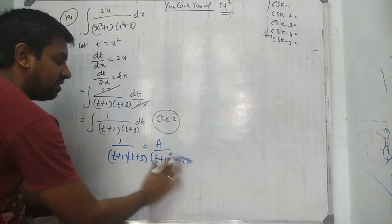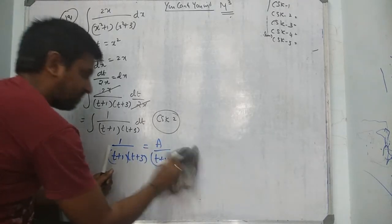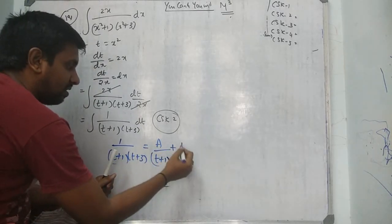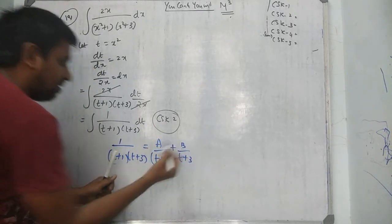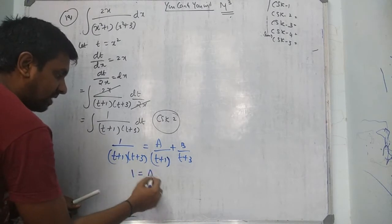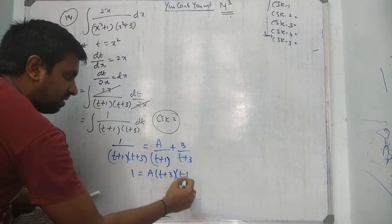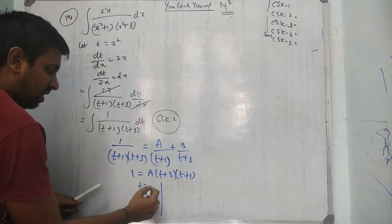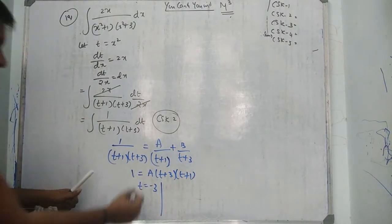So 1 over (t + 1)(t + 3) — CSK2 — write A over (t + 1) plus B over (t + 3). Normal LCM: 1 equals A times (t + 3) plus B times (t + 1). Put t equal to minus 3: we get B's value. Put t equal to minus 1: we get A's value.